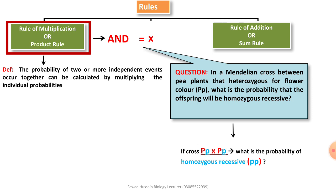अगर हम two heterozygous parents को cross करें — यहाँ पर एक red color में capital P है, एक small P है blue color में। Capital P represent करता है dominant allele को और small P represent करता है recessive allele को। Question में given है कि heterozygous का cross हो गया है। अब इस cross के result में क्या probability है कि homozygous recessive आ जाए — mean that two blue P आ जाए।